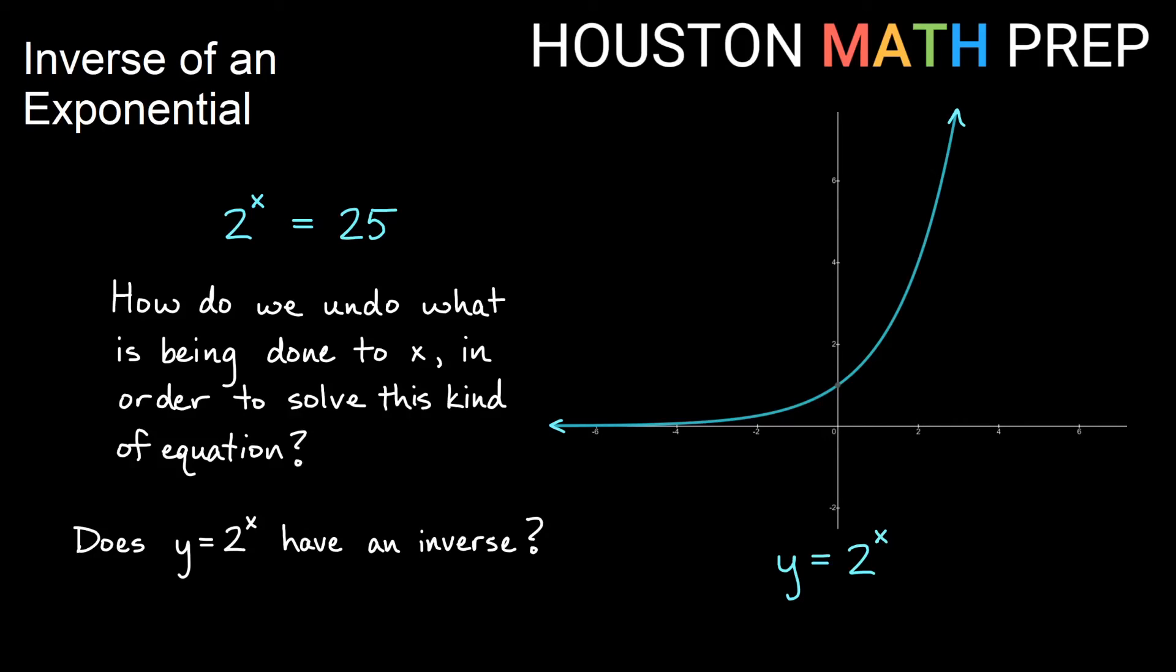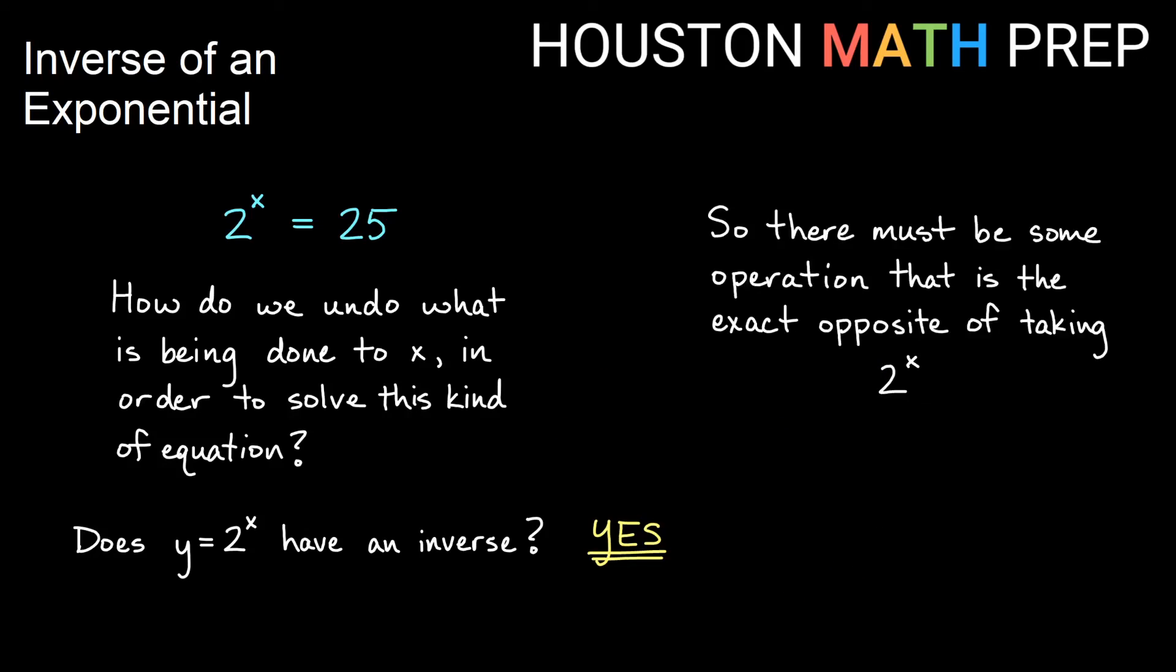In other words, does it pass the horizontal line test? And it does. If I draw a horizontal line through the function at any point, that horizontal line is only going to intersect the graph once. So it does pass the horizontal line test. That means that y equals 2 to the x does have an inverse function.